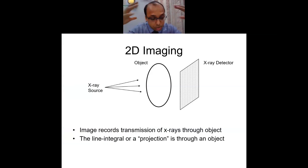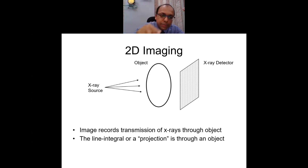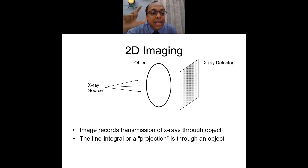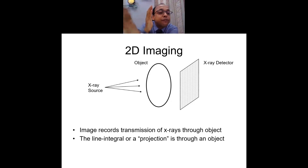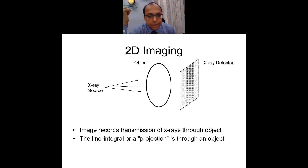X-ray is two-dimensional imaging: the joint or body part is placed between the x-ray source and a film, like a photograph. The x-ray passes through the object and falls on the film — the x-ray detector then develops that film — and what you see on that image helps you understand what is happening within the human body tissues.